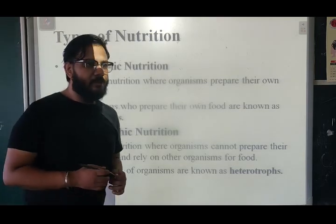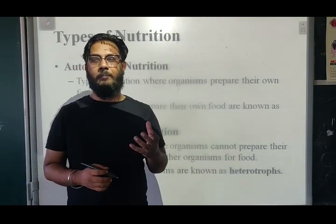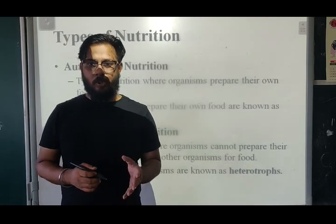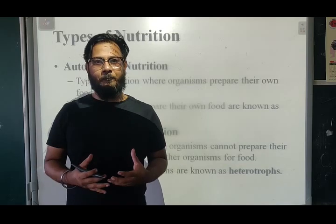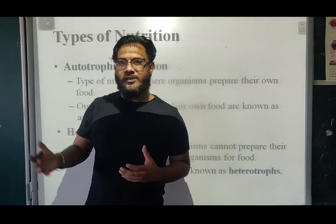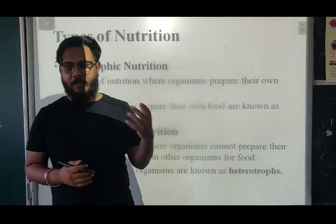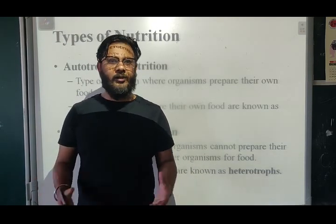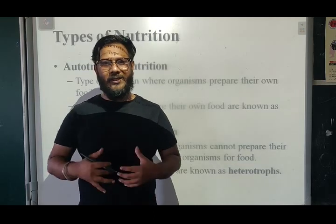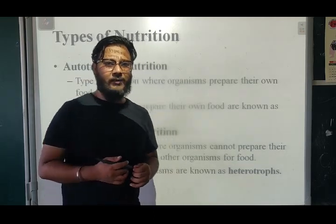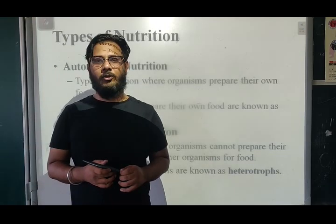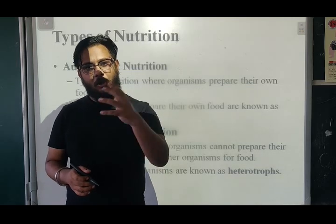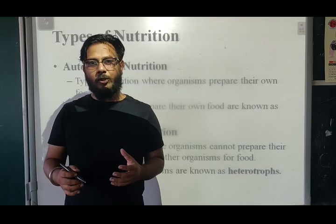Autotrophic nutrition means organisms like plants who make their own food. They don't cook the food, but they make it inside the body — in the presence of sunlight, carbon dioxide, other minerals, and water from the ground. Those organisms are called autotrophs.